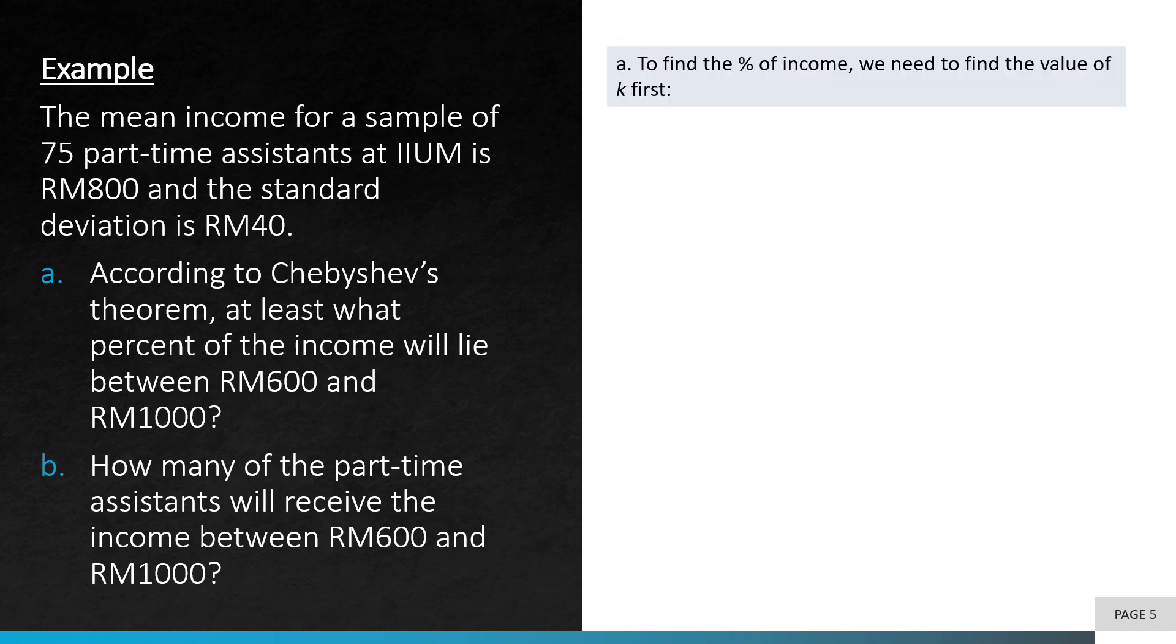First things first, to find the percentage of income, we need to find the value of k. So to do this, we can start off by sketching the information given. What's given to us is the mean, which is 800. And we're given the two limits, the lower value of 600 and the upper value of 1000. The distance between these values from the mean is 200 respectively. Now from this information, we can calculate k.